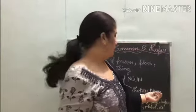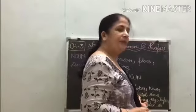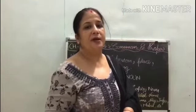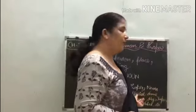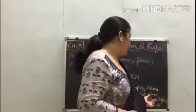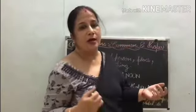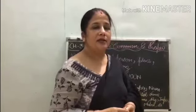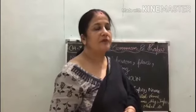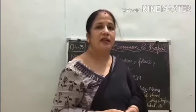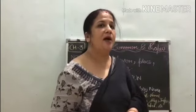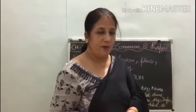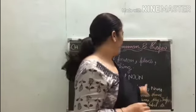Clear students. Toh isme dekho: 'Drama' — kisi girl ka proper ya special name aata hai, toh yeh kya hota hai? Proper noun. 'Raj' — yeh bhi kisi boy ka special particular name hai. 'Jaipur' — yeh bhi kisi city ka proper name hai. 'Taj Mahal' — yeh kya hua? Kisi monument ka particular name. Special name hua. Toh in sab ka kya hai? Proper noun.